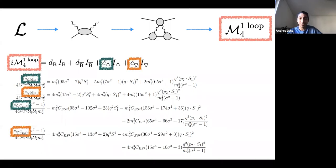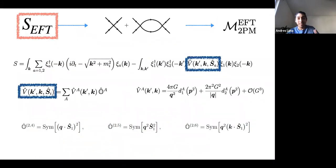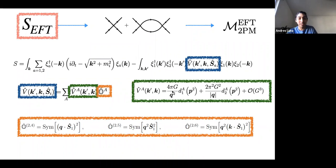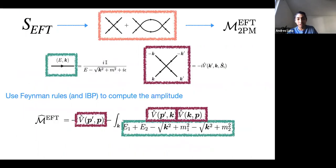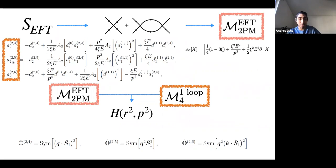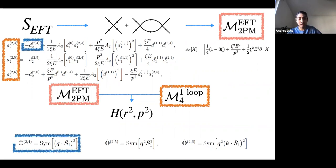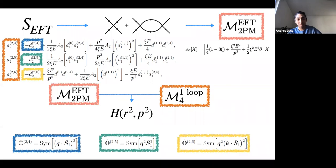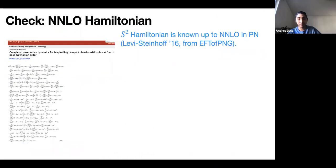We then do the computation on the EFT side. Our operators are those containing spin-squared. We compute the EFT amplitude and obtain those terms. After matching, we extract from the full theory the information from the triangle coefficients and determine the coefficients for these operators. So the coefficients that go into the Hamiltonian for these operators are determined like that.